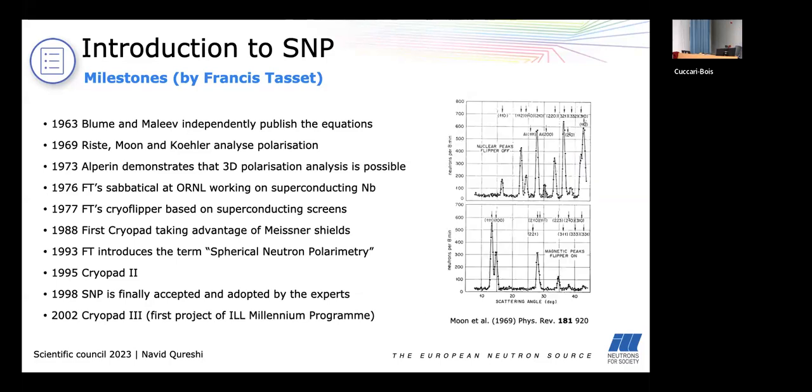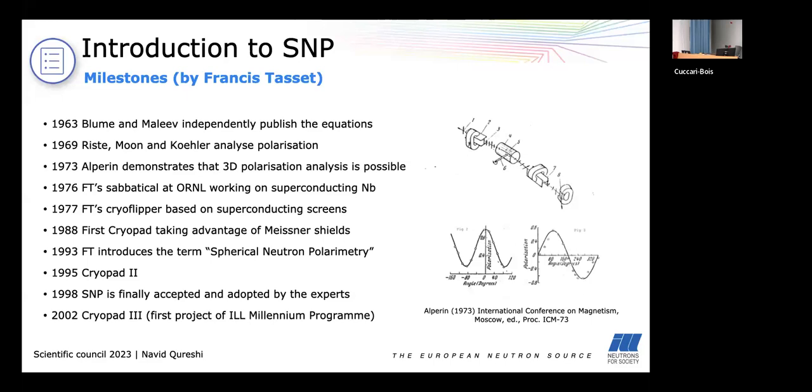And six years later Rist, Moon and Koehler actually showed that by analyzing the longitudinal part of the initial polarization you could for example separate nuclear from magnetic scattering. But they made explicitly clear that it's impossible to measure the transverse components and that is something which stuck around people's heads for a long time or too long a time. In 1973 Alperin showed that it's actually possible to reconstruct the three-dimensional rotation of the neutron spin.